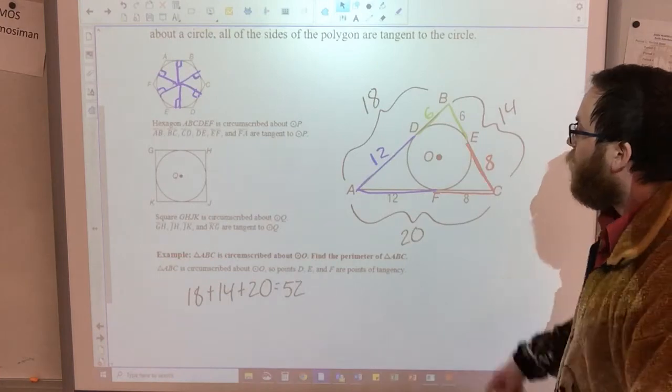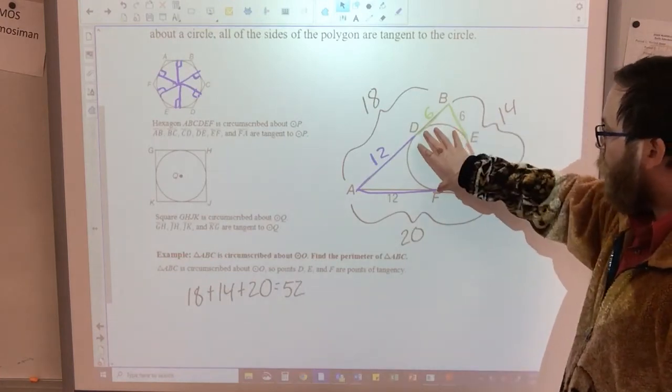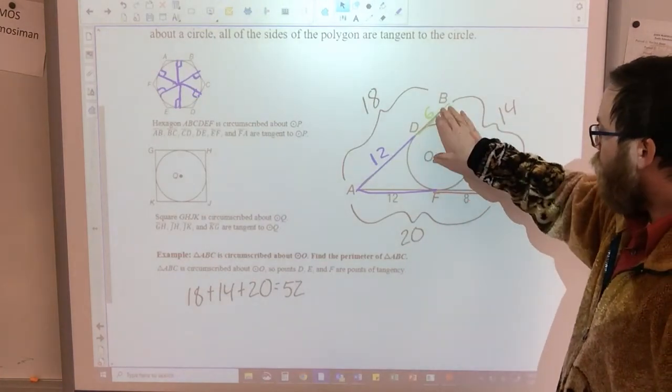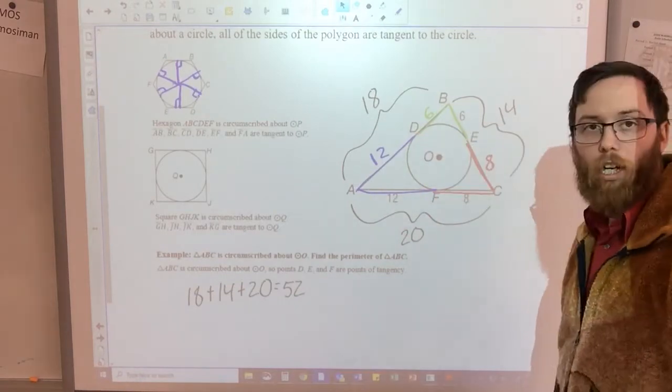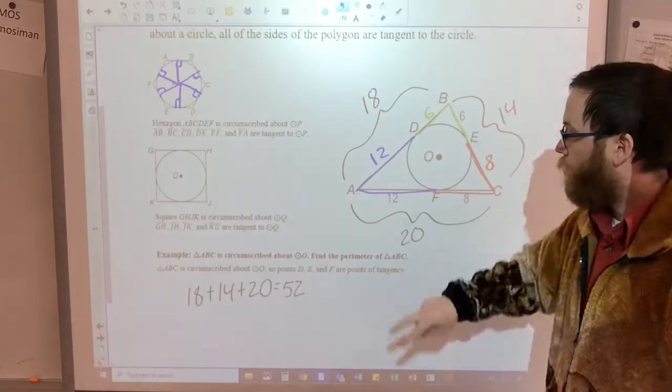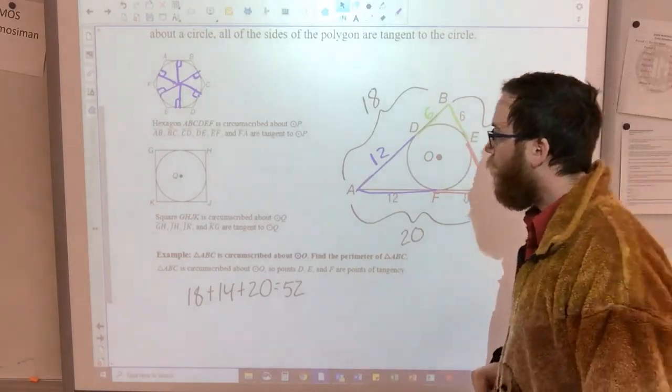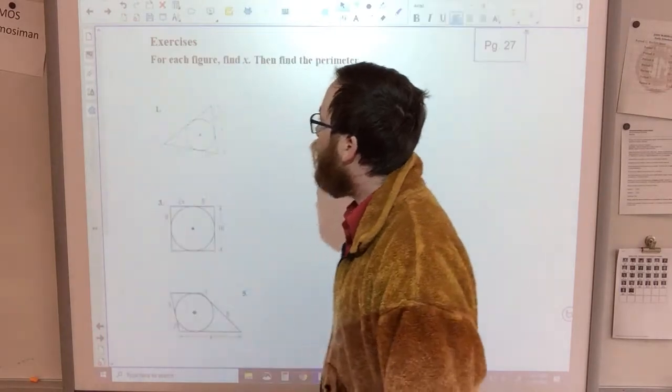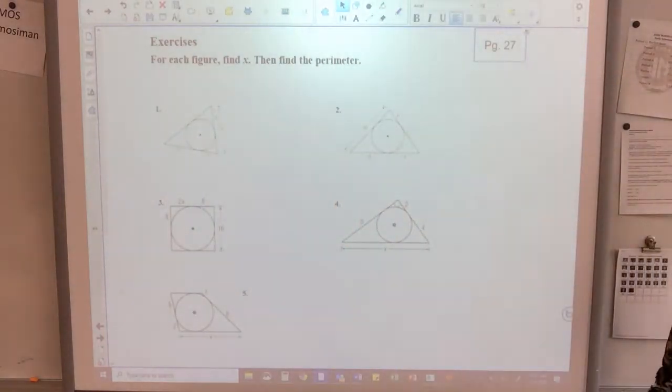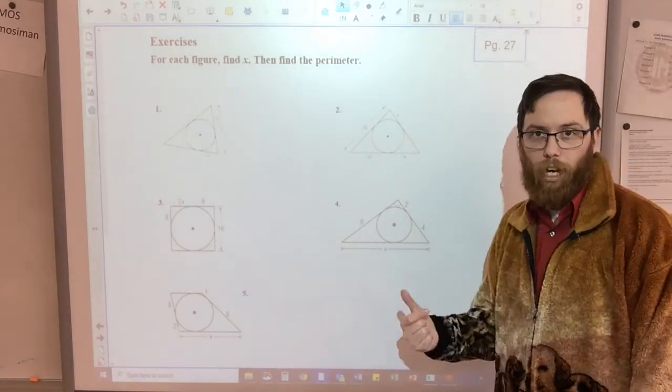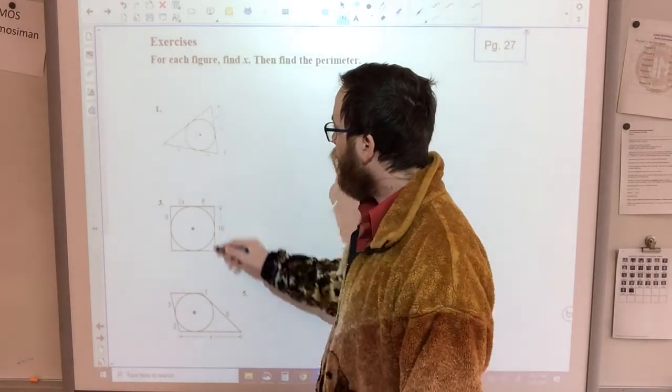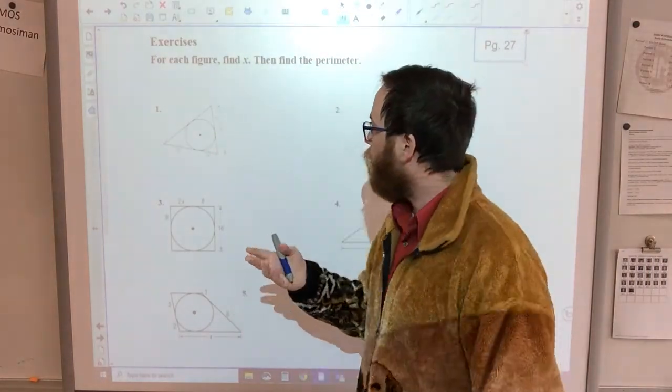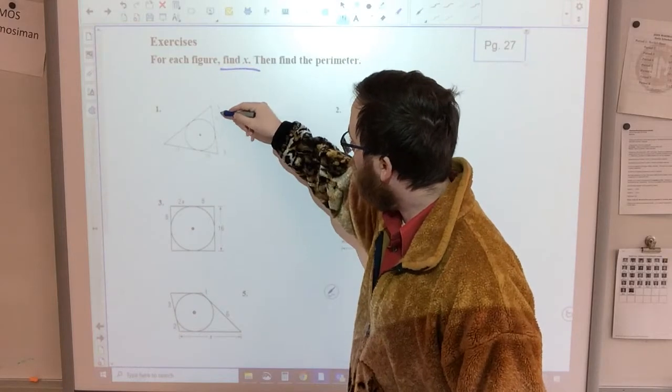So that's second idea. Circumscribed circles have polygons that are around them that touch, that the circle touches each side of the polygon at one point, creating these congruent pieces of the polygon. So for the exercises, this is on page 27. We have a whole bunch of circles inside polygons. And what I do is I just look for all the congruent pieces. So right now it's just saying find x. So here's x on page 27.